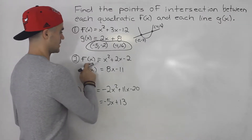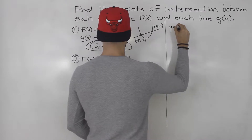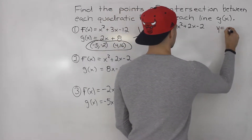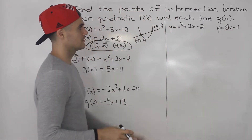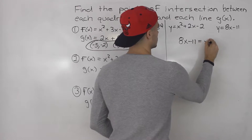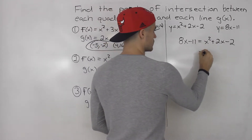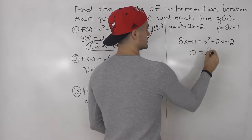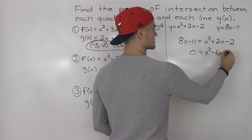Moving on to number 2. We have f of x equals x squared plus 2x minus 2, so y equals x squared plus 2x minus 2. And the line is y equals 8x minus 11. Same approach — make the y values equal: 8x minus 11 equals x squared plus 2x minus 2. Bring everything over to the right side. We get x squared minus 6x plus 9 equals zero.